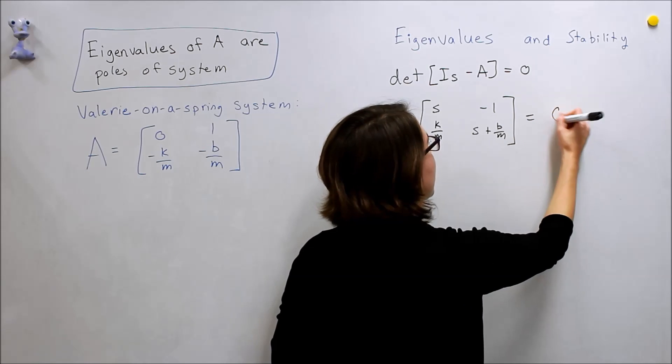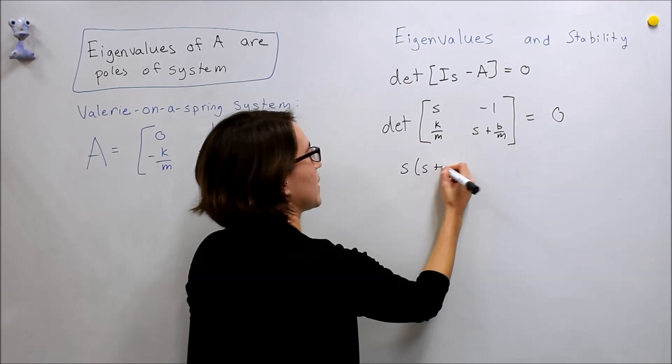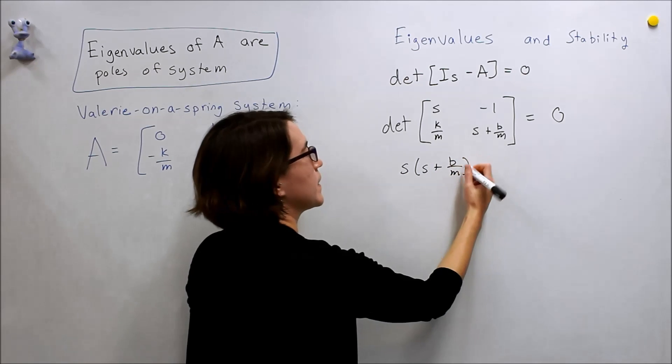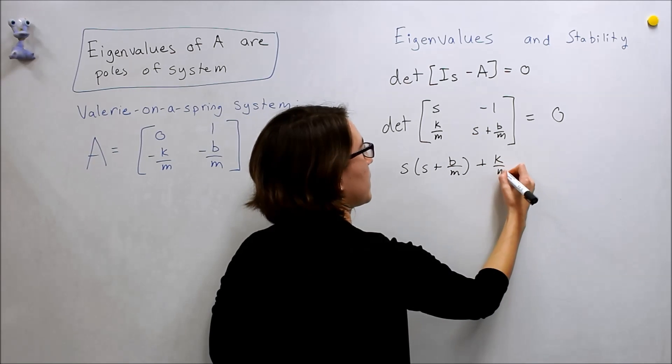Okay, so we take the determinant of that, multiply these together, S, S plus B over M, minus these multiplied together, so we get a plus K over M.